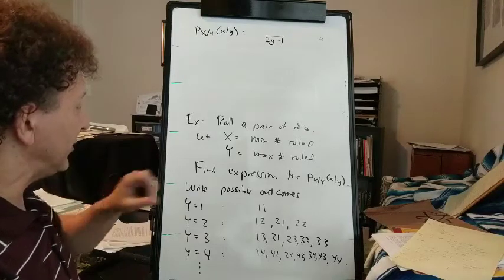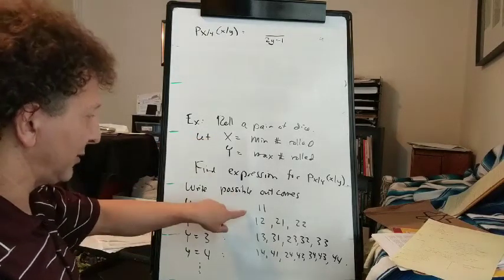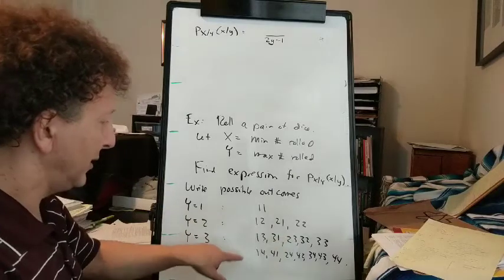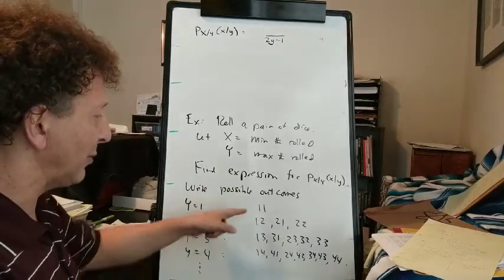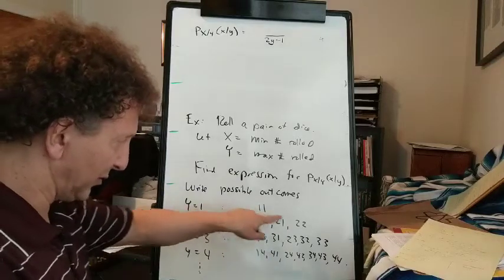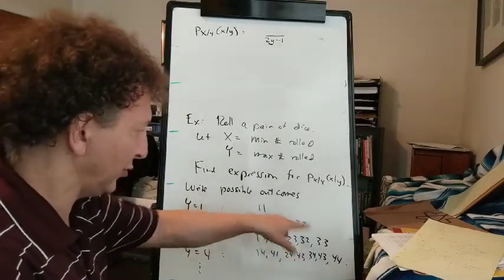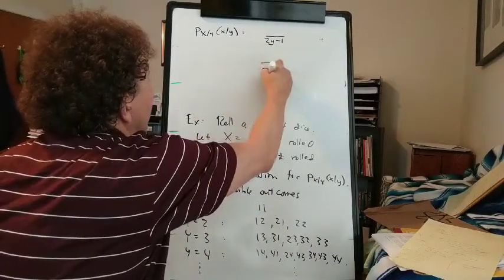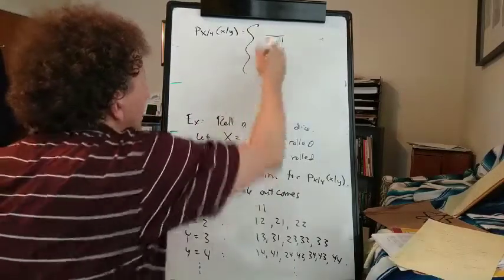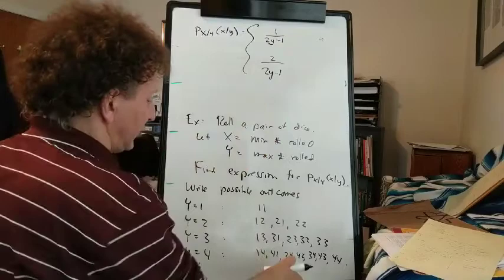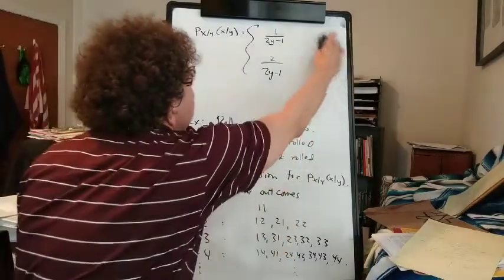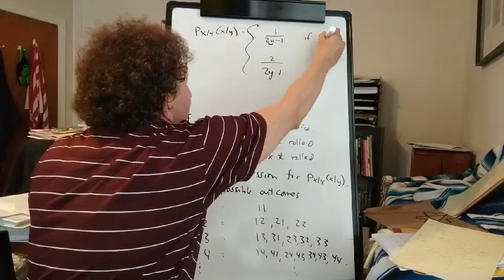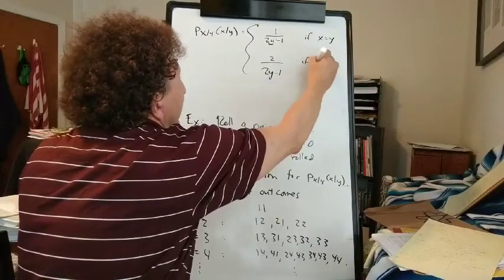The number of possibilities is 2y − 1. So 2(1) − 1 = 1, 2(2) − 1 = 3, 2(3) − 1 = 5, 2(4) − 1 = 7. This will be the denominator. If the minimum differs from the maximum, that outcome appears 2 times; if the minimum equals the maximum, it appears only once. So we need two cases: 1/(2y−1) if x equals y, and 2/(2y−1) if x is different from y.